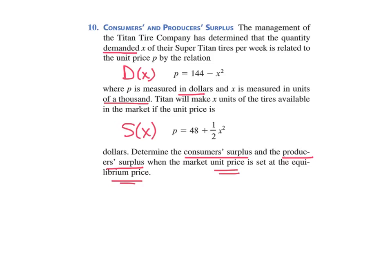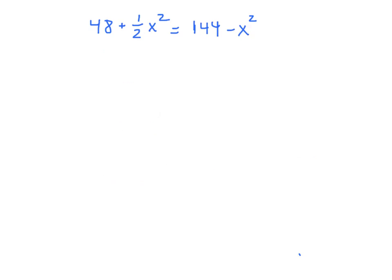In this case, it will be the equilibrium price and quantity. So to get that equilibrium price and quantity, what we do is we set these two equations, the supply equation and the demand equation, equal to each other. And then we go ahead and solve. You can see this is going to be a quadratic.